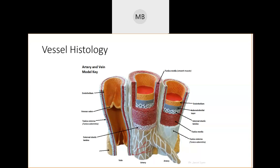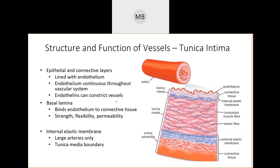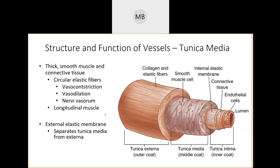The vasa vasorum is a small network of arteries and capillaries that supplies the large tunica externa with the blood needed to keep your other arteries and veins going. Things get more specific the deeper you look and bigger the more outside you examine — just like all science.